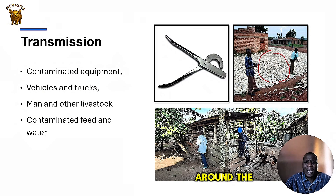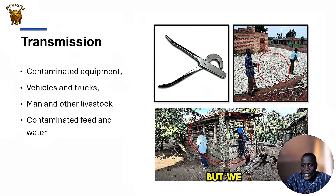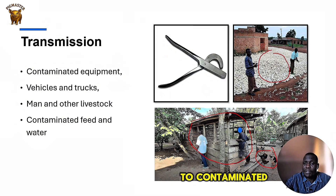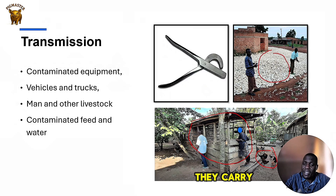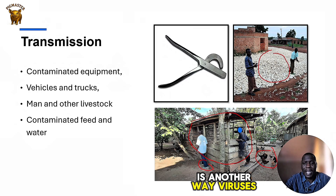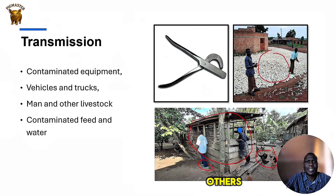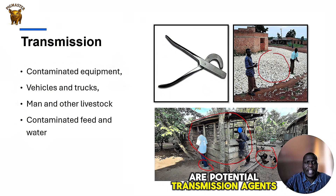During farm visits, such as this farm in Nakaseke, you can see that birds can easily access the swine facility. Chickens roam freely around the barn, and when they step onto a contaminated floor and then come into the swine facility to peck at grains or leftovers, they carry the virus with them. Additionally, this owner has no protective gear and anyone — visitors included — can access the barn. Man, livestock, vehicles, and feed are all potential transmission agents of the virus.